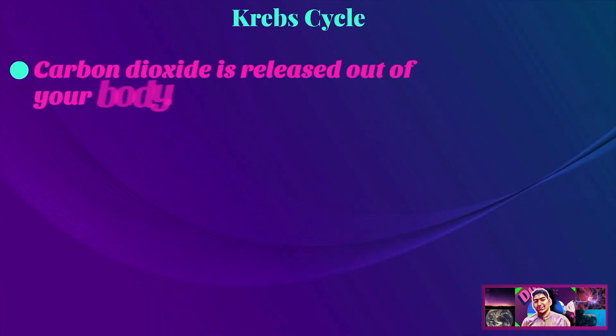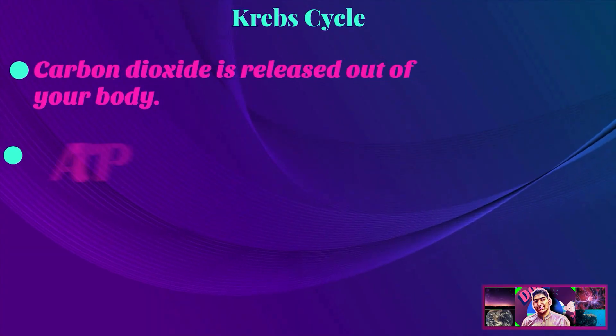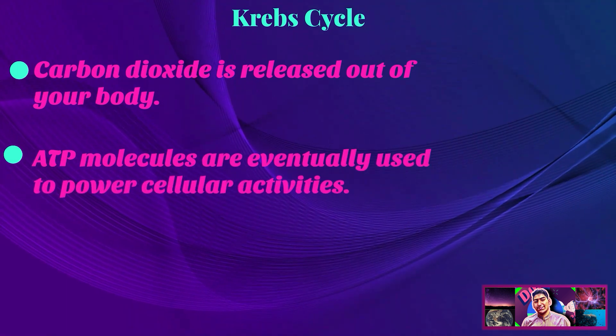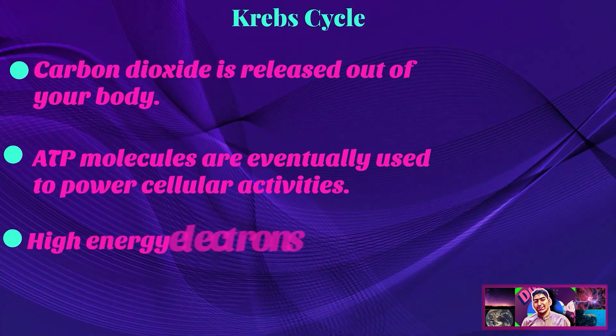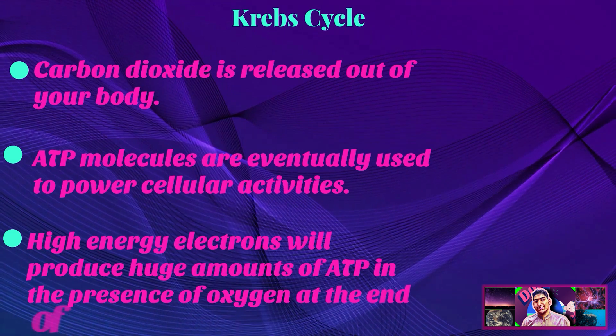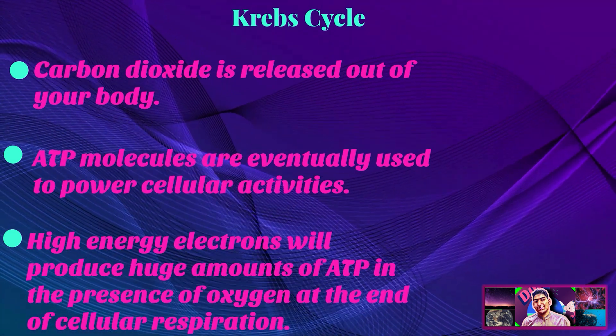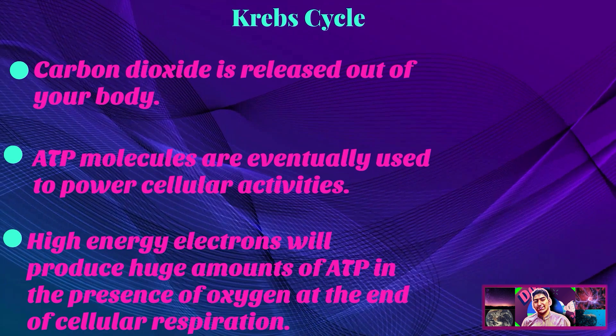FAD and FADH are quite similar to NAD and NADH. After all this complex information, you might be thinking: what happened to the Krebs cycle's products? Carbon dioxide is released out of your body. ATP molecules are eventually used to power cellular activities. And high-energy electrons will produce a huge amount of ATP in the presence of oxygen at the end of cellular respiration.